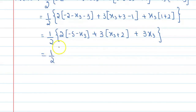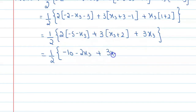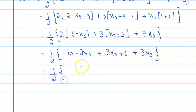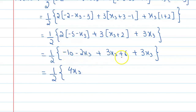Again, one-half times: multiplying out — 2 times -5 is -10, 2 times -x3 is -2x3. Then 3 times x3 is 3x3, 3 times 2 is plus 6. And plus 3x3. Combining like terms: -2x3 + 3x3 + 3x3 = 4x3. And -10 + 6 = -4. So we get one-half times (4x3 - 4).